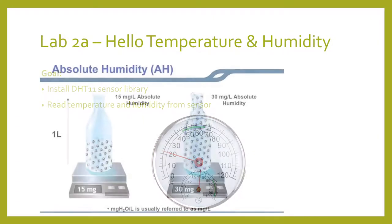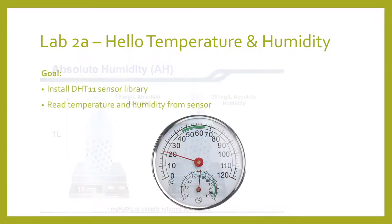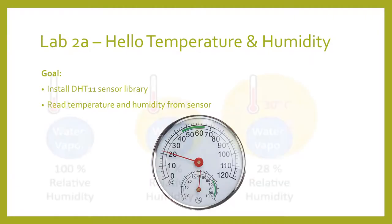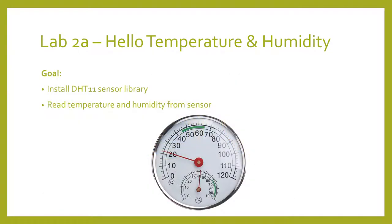One is absolute humidity, which is the total water in the air per unit volume — so we'd say something like 10 grams of water in a cubic meter of air. The other, more common way to measure it, and the way we will be measuring it, is relative humidity. This is the ratio of current absolute humidity divided by the maximum absolute humidity at a given temperature. This is expressed as a percentage, and what we commonly associate with humidity in weather and environment. So when we say 70% humidity, what we really mean is 70% relative humidity.